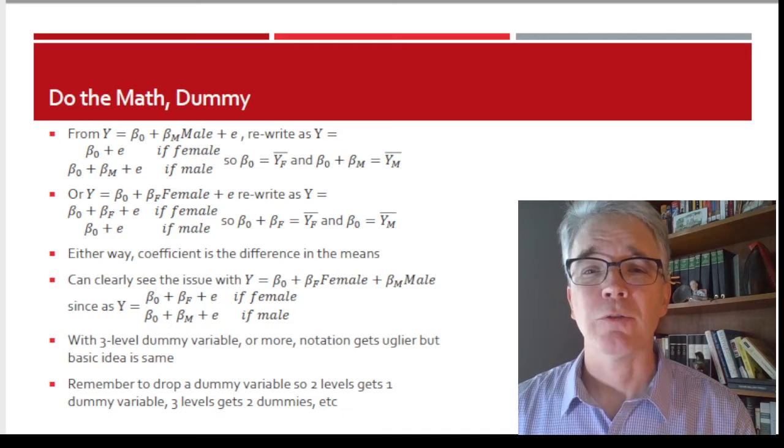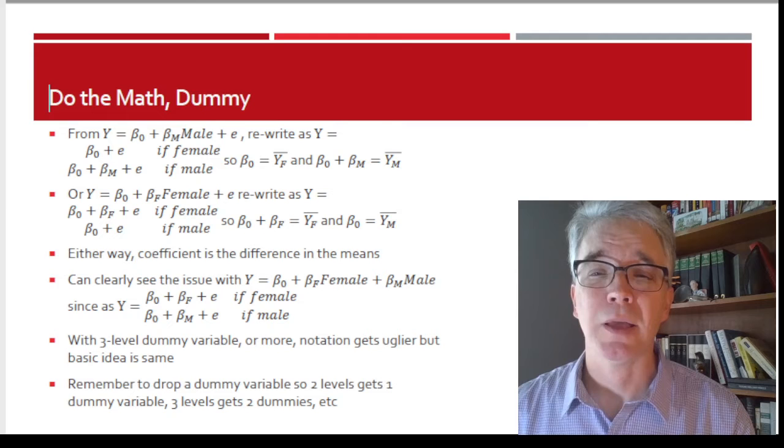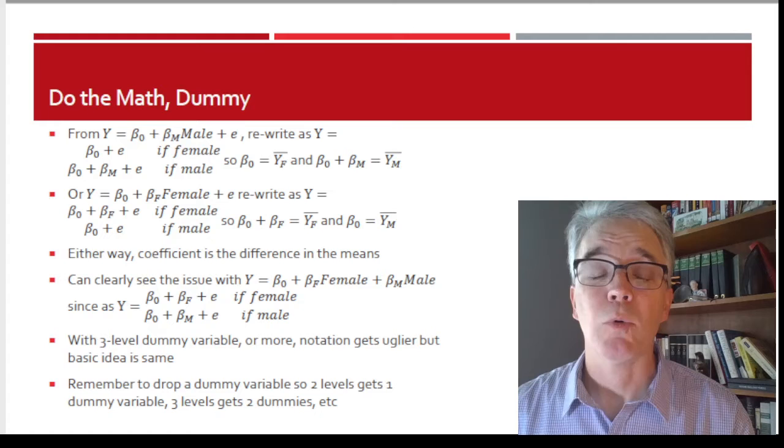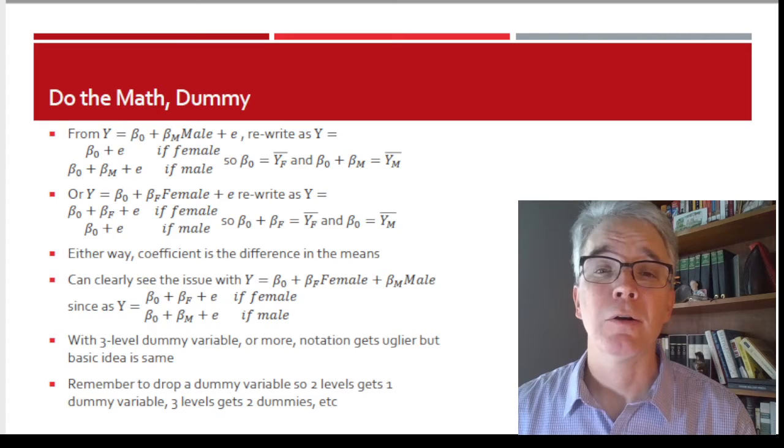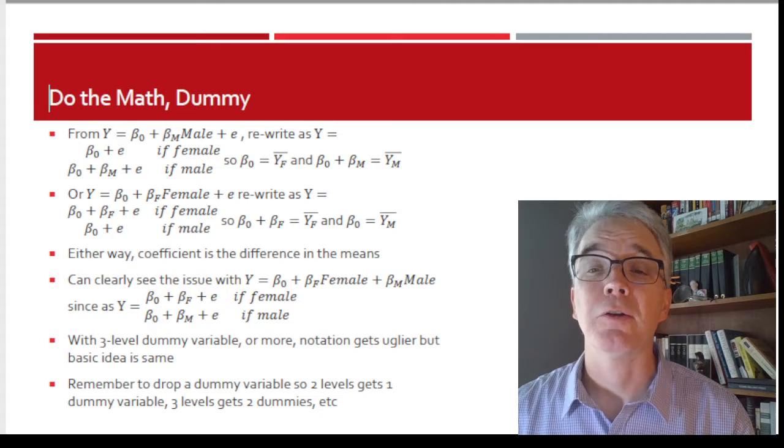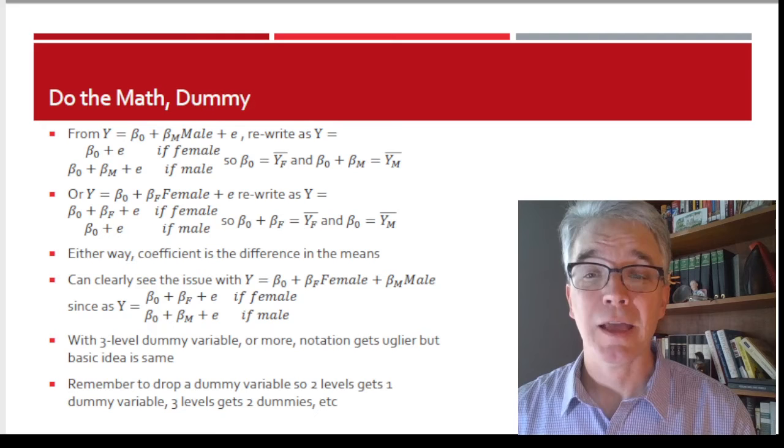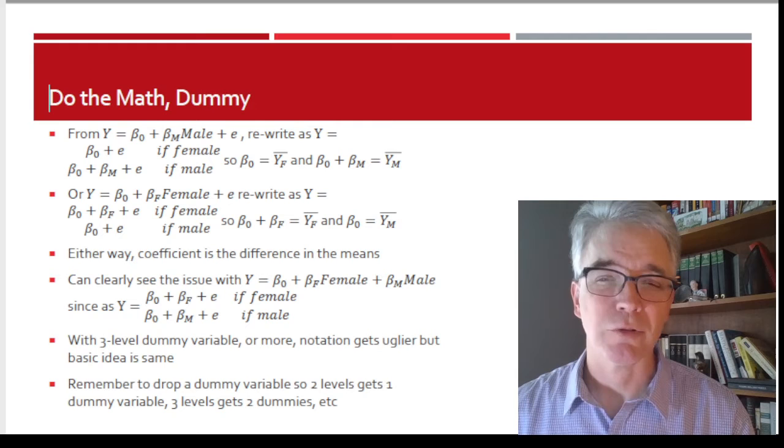So if I have regression Y = β₀ + βₘMale, then rewrite that in two rows. So either Y = β₀ + ε if the person's female or β₀ + βₘ + ε if they're male. And so the regression is going to set β₀ equal to the average for the females and β₀ + βₘ is going to be the average for the males.